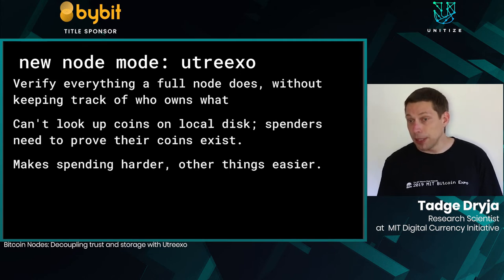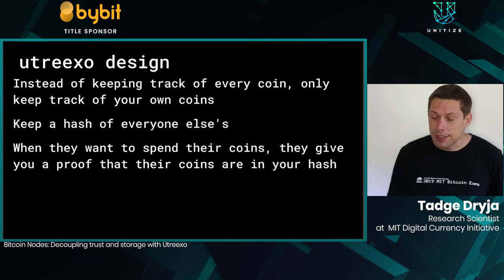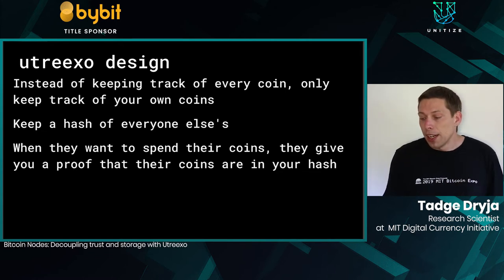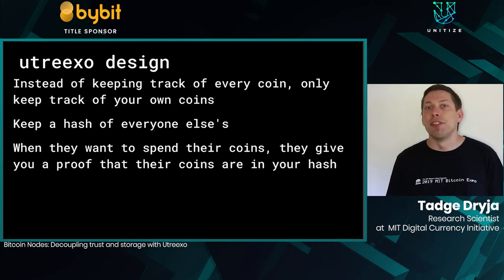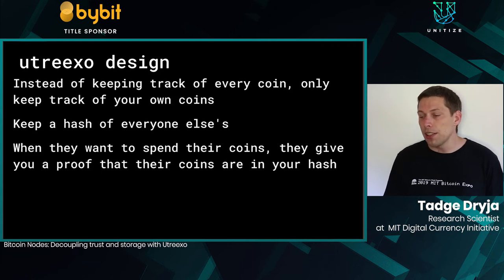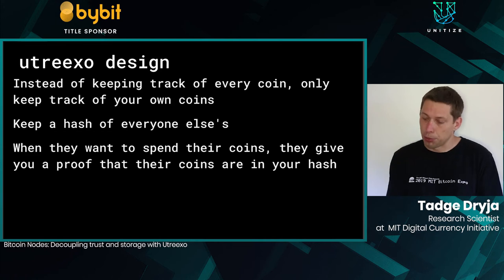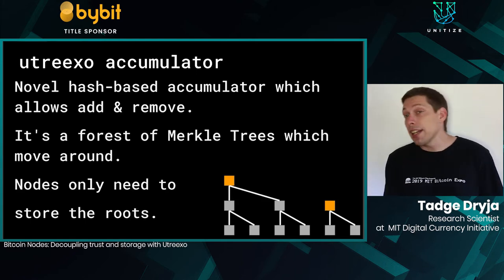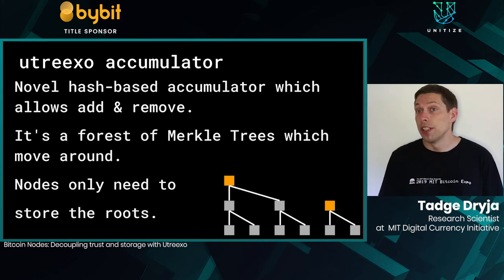You verify everything a full node does, but you don't keep track of who owns what — you have no database at all. Instead, the people spending the coins need to prove those coins exist. It makes spending a little harder but other things much easier. Instead of keeping the whole ledger built by the blockchain, you only keep track of your own coins, a proof they exist, and a hash of everything else. All 70 million other UTXOs — you just keep that hash; it's very small. We use an accumulator: a cryptographic construction where you throw data in and can prove it was inserted, but can't get it back out.